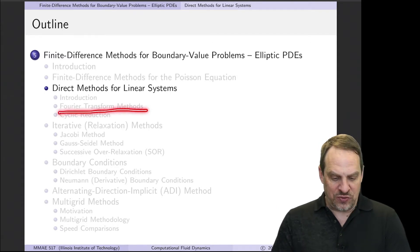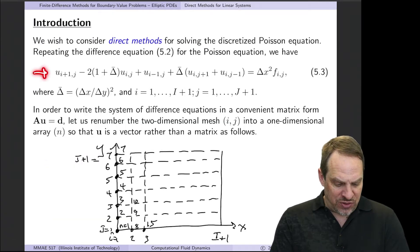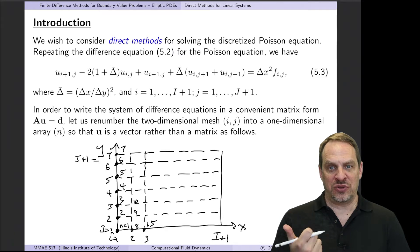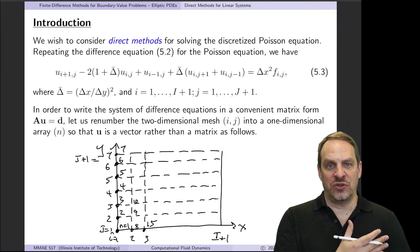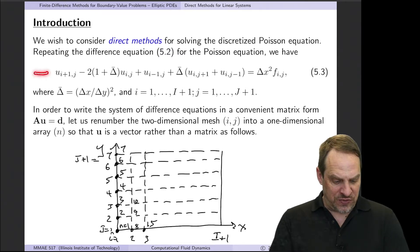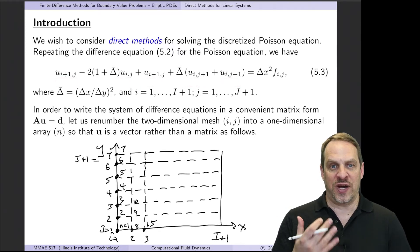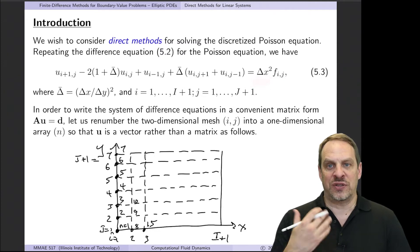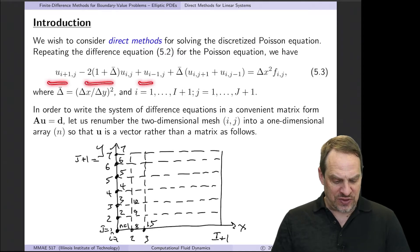We're going to talk about the Fourier transform method and cyclic reduction. Let me rewrite our finite difference equation. 5.3 here is the same finite difference equation we had in the previous video for the Poisson equation. We start with the Poisson equation: partial squared u partial x squared plus partial squared u partial y squared equals some known function f of xy on the right-hand side. We use second-order accurate central difference approximations for the two second derivatives, and then put all the unknowns on the left and all the knowns on the right. The only difference you'll see in this form versus the previous form, I have denoted the square of delta x over delta y as delta bar, just to simplify things slightly.